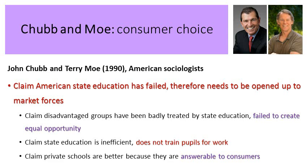Chubb and Moe are two members of the neoliberal new right — American sociologists — interested in consumer choice. They claimed that the American state education system had failed and therefore needed to be opened up to market forces. They claimed that disadvantaged groups had been badly treated by state education and it failed to create equal opportunities — therefore no meritocracy. They also claimed that private schools are better because they are answerable to consumers. If parents are unhappy with the quality of education, they simply stop paying and send their child elsewhere — so private schools have to keep on top of their game.